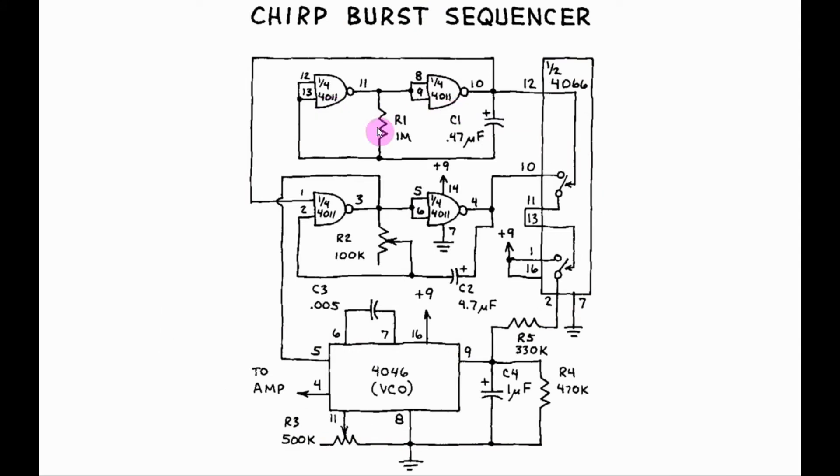The output of these two clock generators are applied to this 4066 IC, where we are using two of its electronic switches to give us at the output this clock signal, which is used to drive the VCO within the 4046 IC.